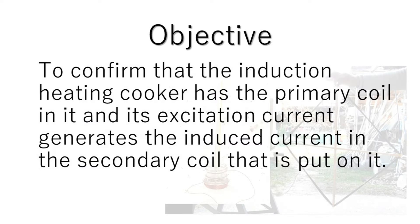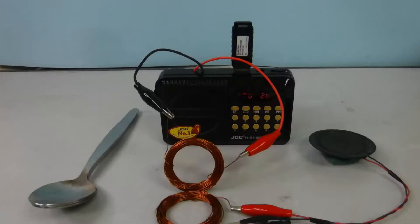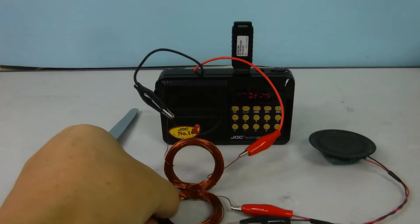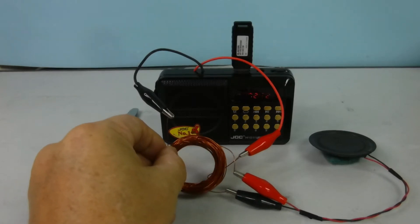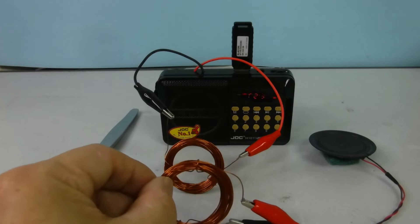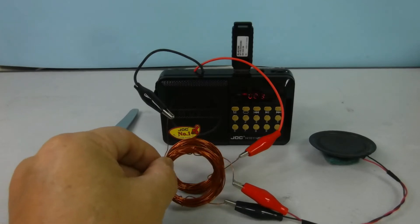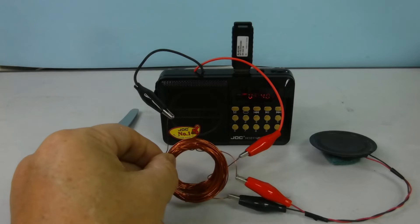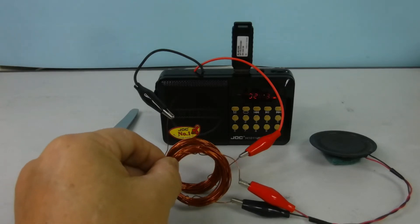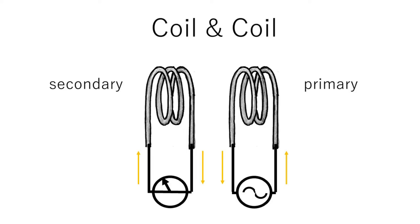The objective is to confirm that the induction heating cooker has a primary coil in it, and its excitation current generates the induced current in the secondary coil placed on it. The electric current in a primary coil can generate the induced current in a secondary coil.